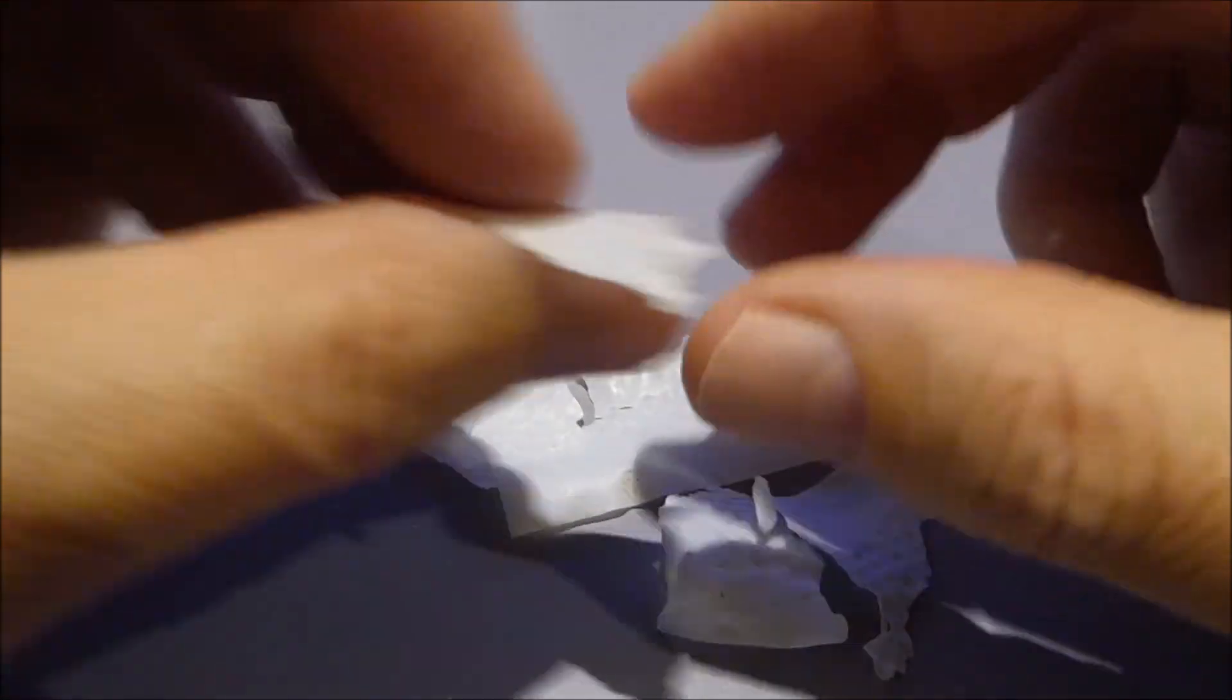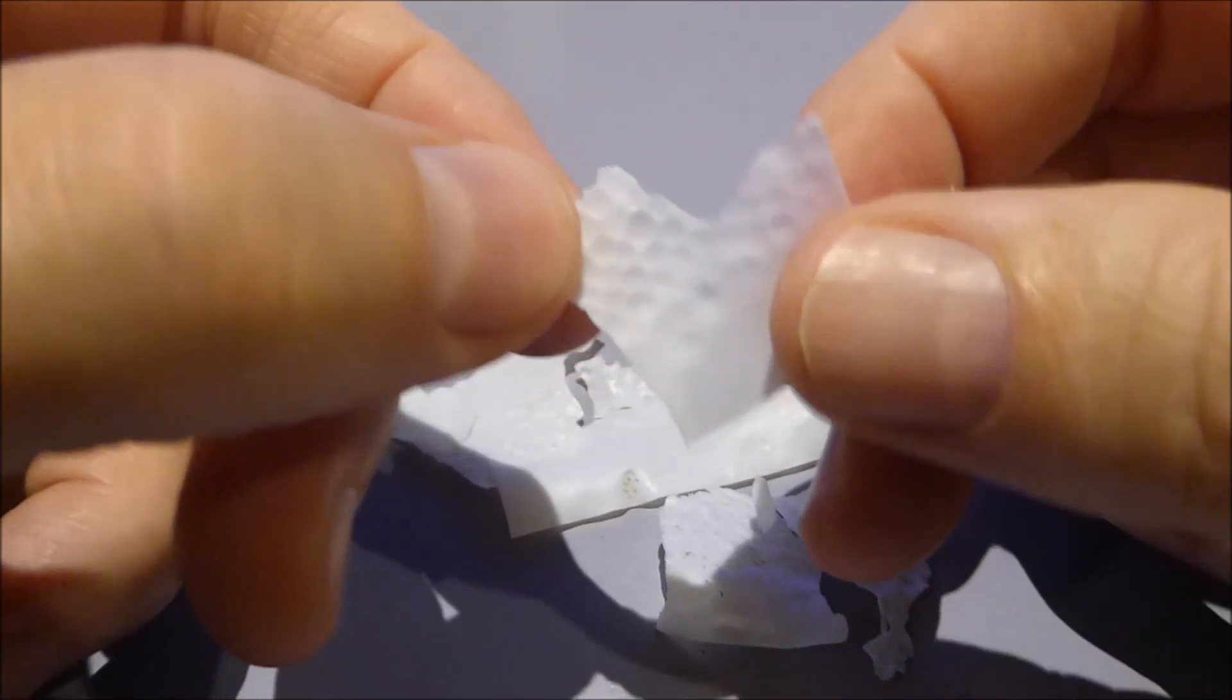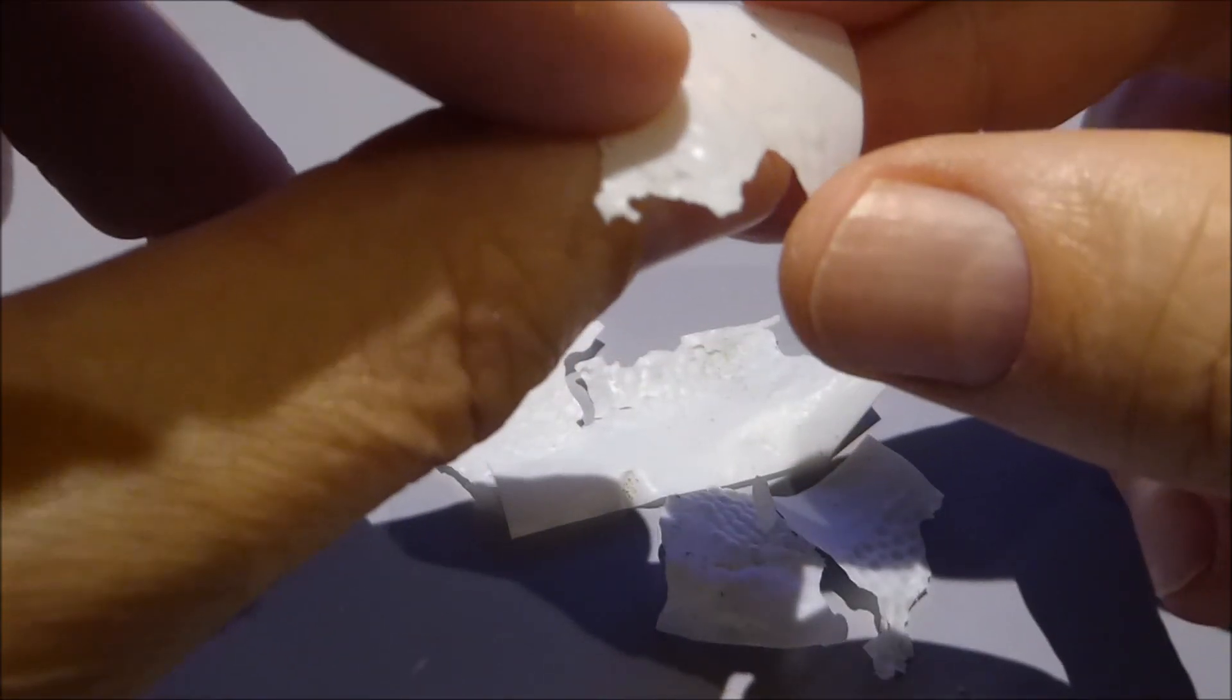Even with all that Teflon ripping we aren't seeing any holes in the wad petals, which I think is a pretty good sign. The tungsten isn't penetrating. Here you can see the Teflon rip into several pieces in front of the barrel.